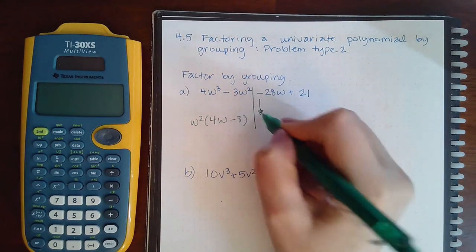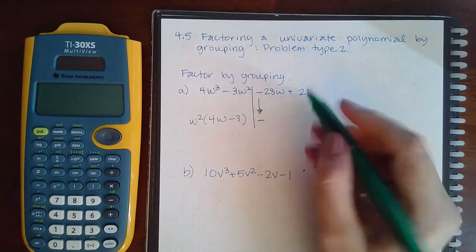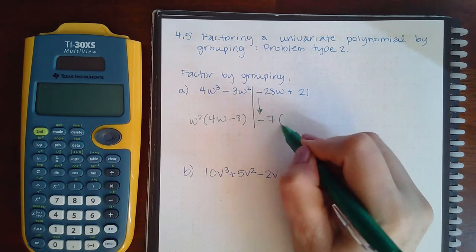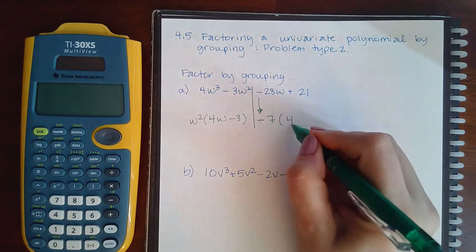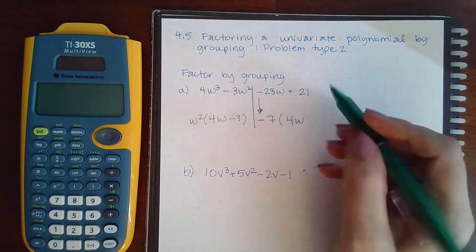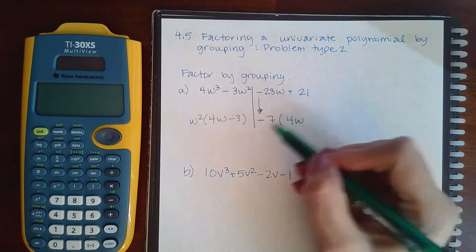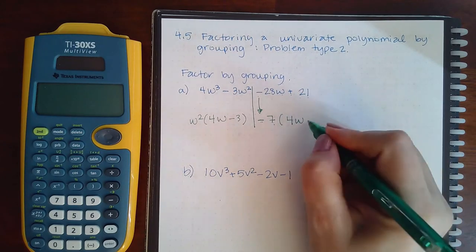I must bring down the negative, and then these two have a 7 in common. But a negative 28w divided by a negative 7 will actually be a positive 4w, and a positive 21 divided by a negative 7 will be a negative 3, making these two things match.